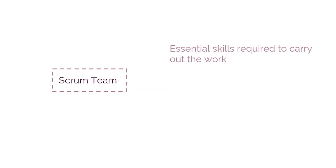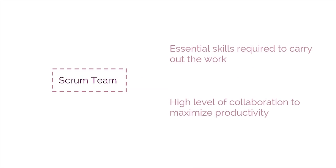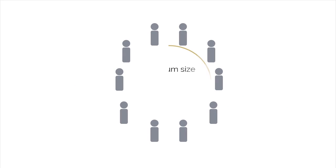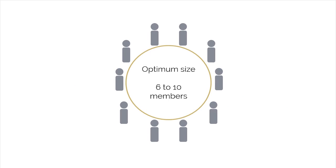It's also necessary to have a high level of collaboration to maximize productivity so that minimal coordination is required to get things done. The optimum size for a Scrum Team is 6–10 members, large enough to ensure adequate skill sets, but small enough to collaborate easily.